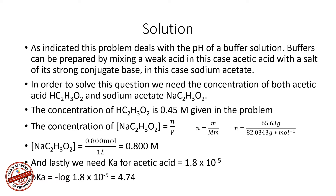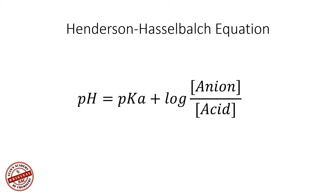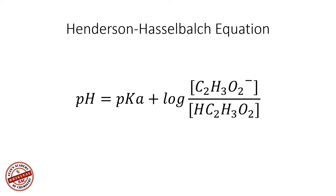With this information, we can determine the pH of the buffer solution using the Henderson-Hasselbalch equation. The general form is: pH = pKa + log([anion] / [acid]). In this case, the anion is the acetate ion (C₂H₃O₂⁻) and the acid is acetic acid (HC₂H₃O₂), and we have the numerical values for both concentrations.